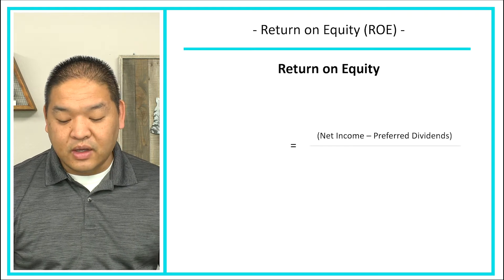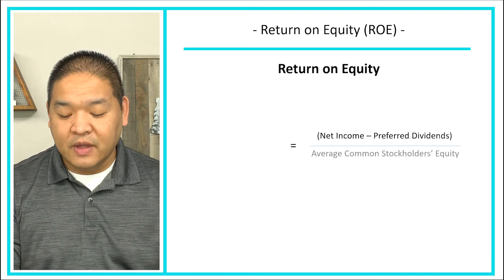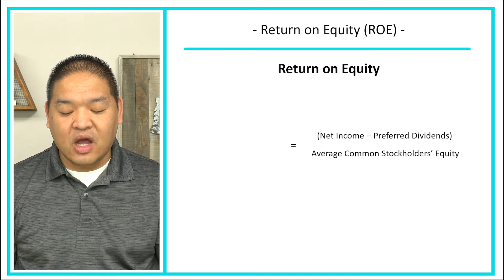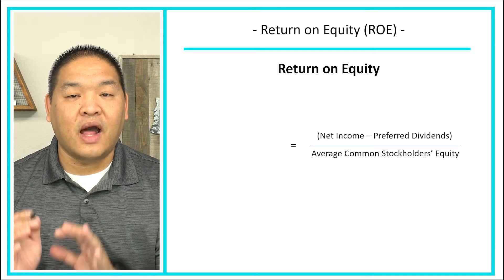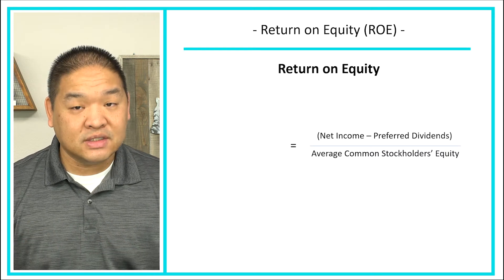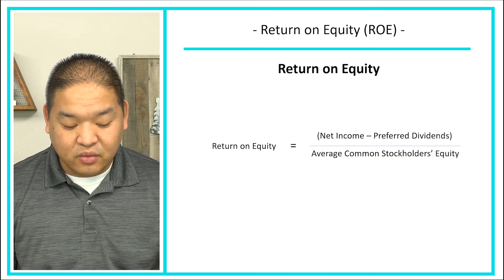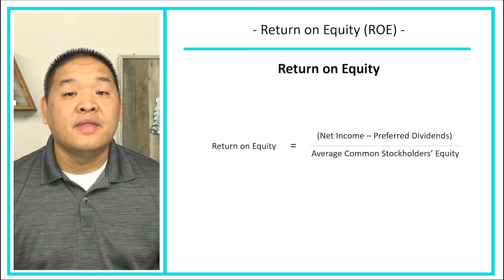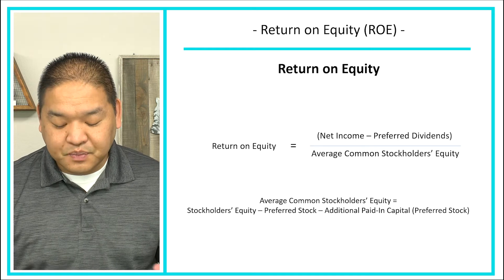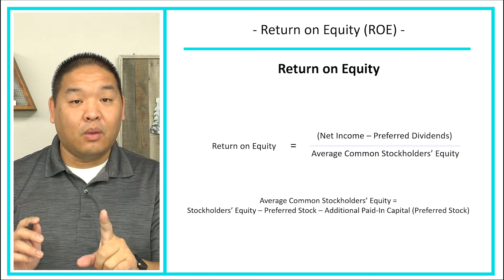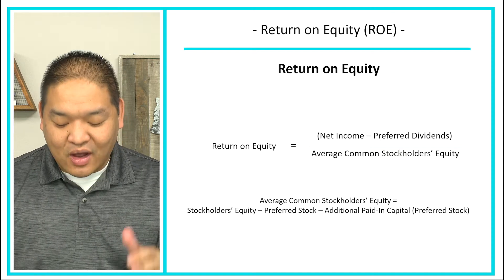To calculate return on equity, we take net income minus preferred dividends — just like we did in the last lesson — and divide this by the average common stockholders' equity in dollars. We're not looking at number of shares this time; we're looking at a dollar value amount. That gives us our return on equity.